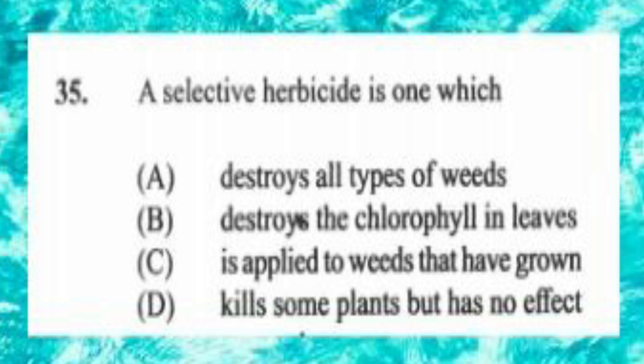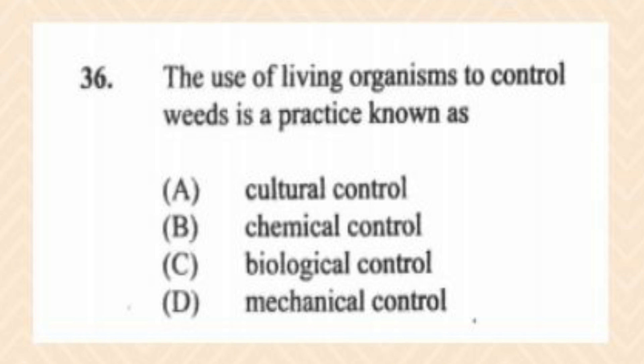Question number thirty-five: a selective herbicide is one which A) destroys all types of weeds, B) destroys the chlorophyll in leaves, C) is applied to weeds that have grown, D) kills some plants but has no effect on others. The answer is D. Question number thirty-six: the use of living organisms to control weeds is a practice known as A) cultural control, B) chemical control, C) biological control, D) mechanical control. The answer is C, biological control.